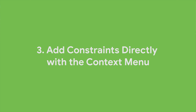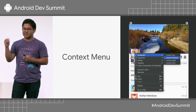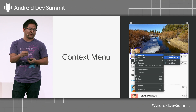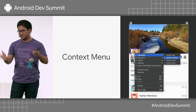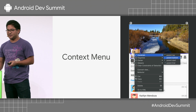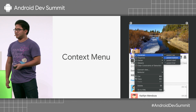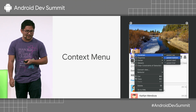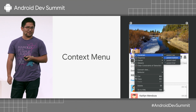We've added the ability to add constraints directly with the context menu. If you have components that are really close to each other, this makes it a lot more precise and direct to set those constraints. This is available in Android Studio 3.3 beta, so you can try it out today. If you select one component — say, a cat picture — you can simply constrain it to the parent.